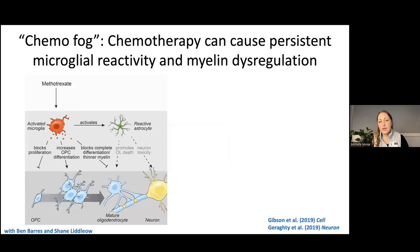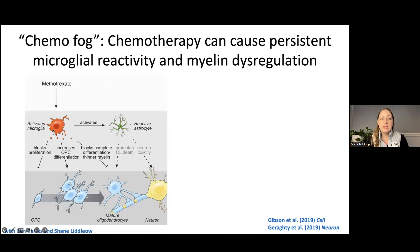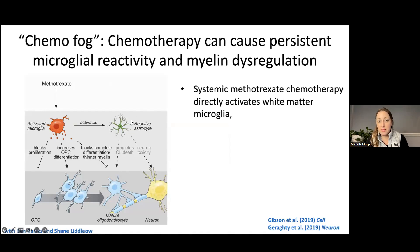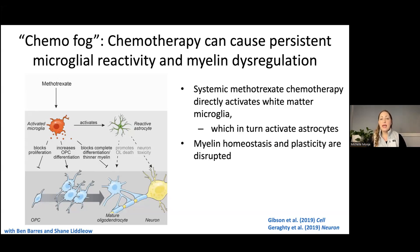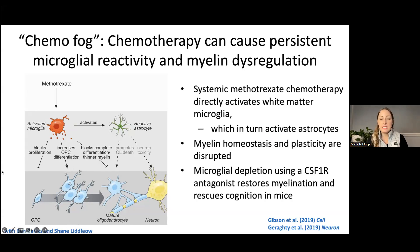Considering cognitive impairment after traditional cancer therapies, we studied methotrexate — a very commonly used chemotherapeutic agent associated with brain fog. We find that methotrexate directly activates microglia, the resident macrophages in the brain, as well as other myeloid cells. These activated microglia then activate astrocytes, causing them to shift from a homeostatic state to a more reactive state. Together these reactive glia — microglia and astrocytes — impair myelin homeostasis and plasticity. If we deplete microglia experimentally using a small molecule inhibitor of CSF1R, which is required for microglial survival, that restores oligodendroglial dynamics, myelination, and rescues cognition.